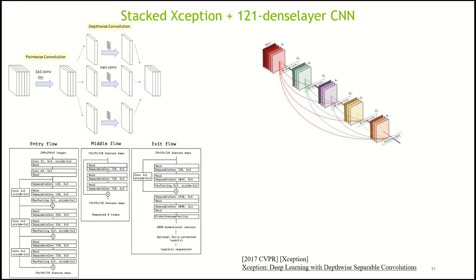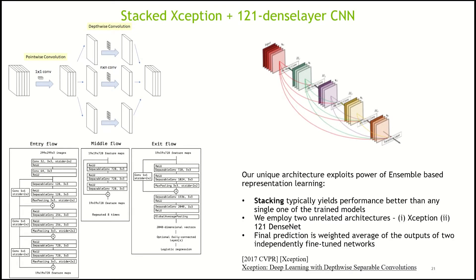This is the brief detail of the stacked Xception129 ensemble model. Stacking yields slightly better performance than using a single network. The final prediction is the weighted average of outputs of the two independently trained networks, which was done via transfer learning.